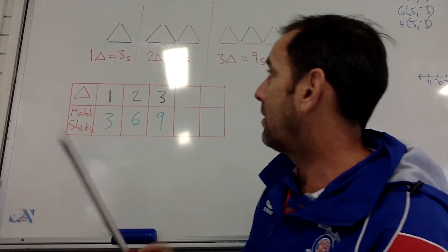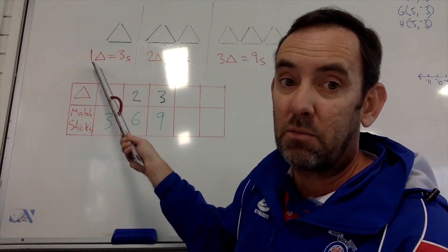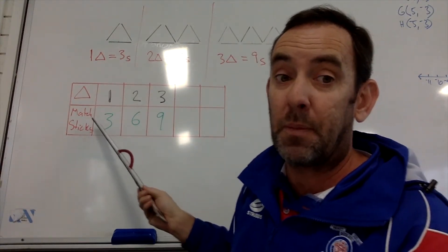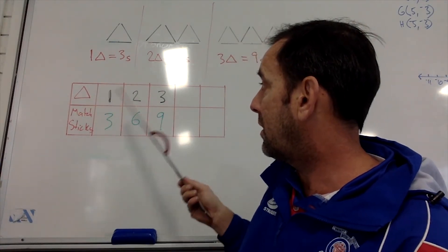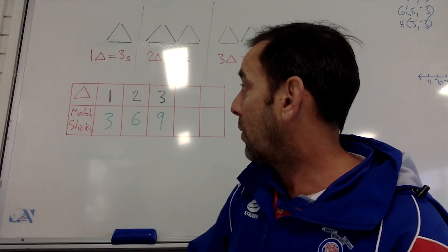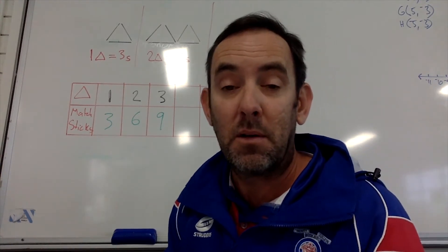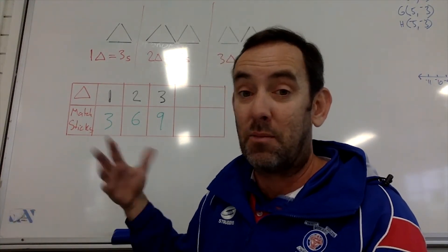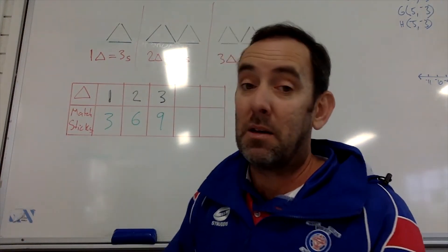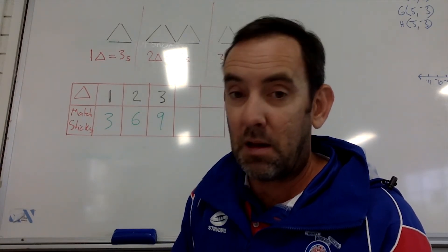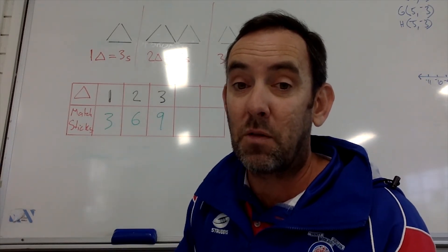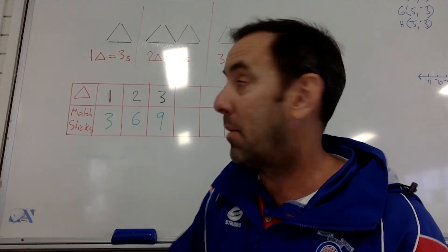I've taken our information about the triangles — one triangle, three matchsticks; two triangles, six matchsticks; three triangles, nine matchsticks — and put them into a table. I've got the number of triangles on the top: one, two, three, and how many matchsticks it takes to make those triangles. What we can see is there is actually a pattern. The number of matchsticks to make the triangles is going to be three times how many triangles you make.